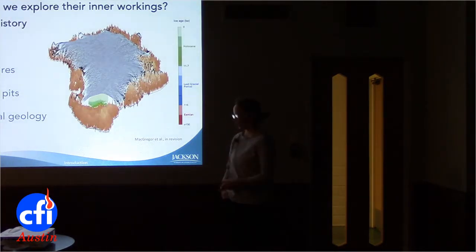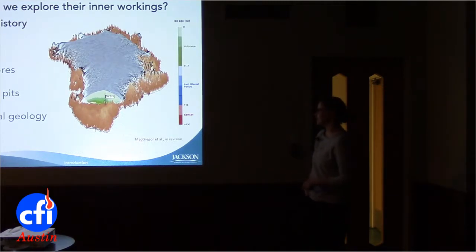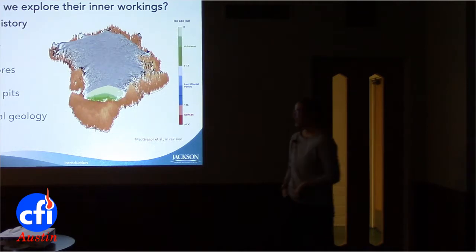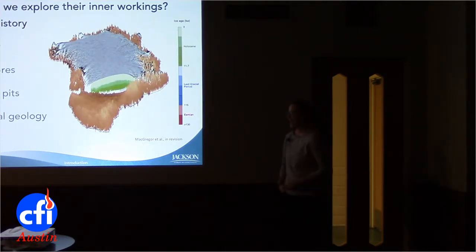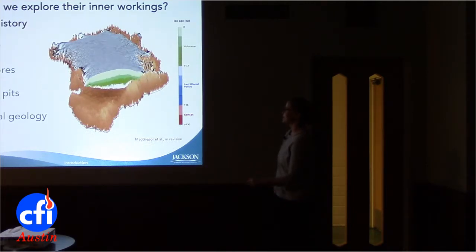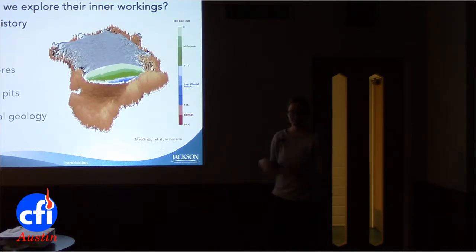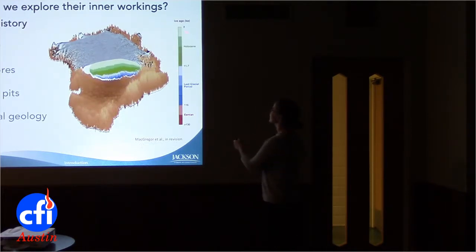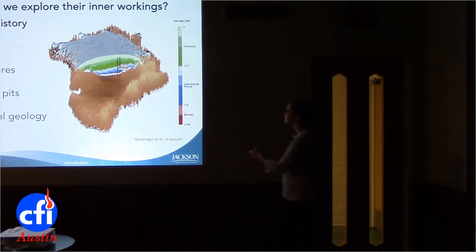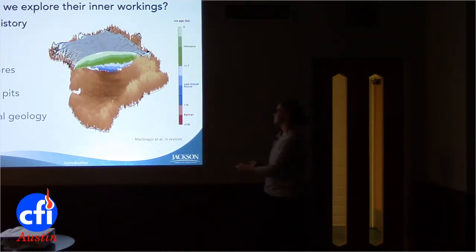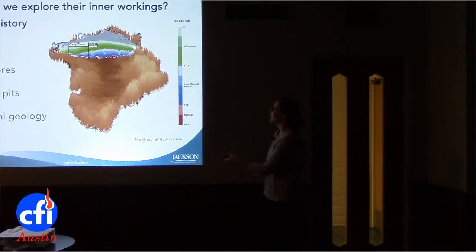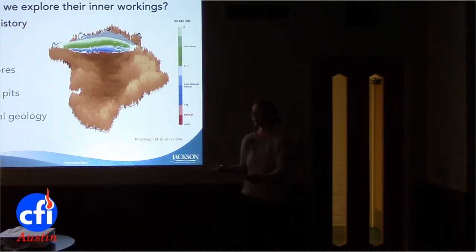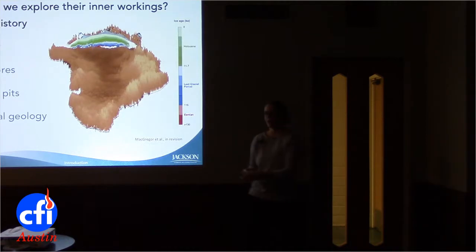With radar, a colleague of mine at the Institute for Geophysics has taken all radar data from Greenland from 1970 to present, interpolated and mapped that data, and actually obtained an actual age structure for the entirety of the Greenland Ice Sheet — the first time we've been able to do this. In green is recent ice from the Holocene; here is ice from the last glacial maximum; and here we have ice from the Eemian, more than 130,000 years old. The poles popping up are ice cores, and we use data from those ice cores to date the radar layers on the ice sheet.